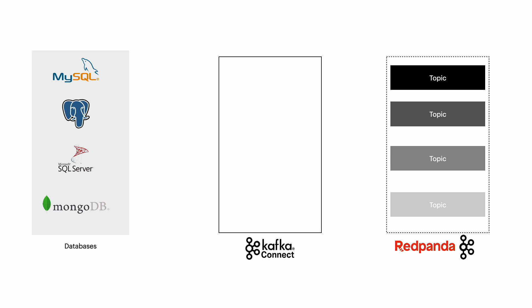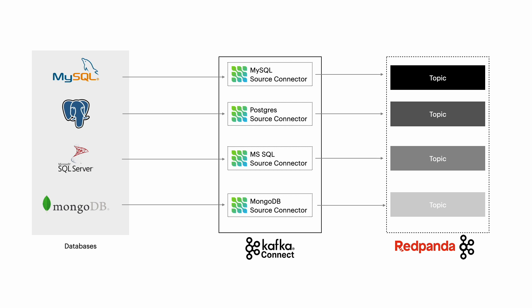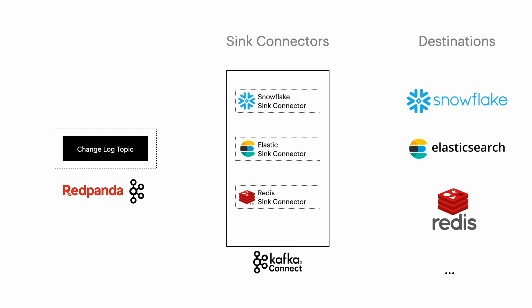When it comes to transaction logs, different databases have different implementations. For example, in MySQL it's called the binary log or binlog. In Postgres, it's called the WAL or write-ahead log. And in MongoDB, it's called the oplog or operations log. For each database type, Debezium implements a Kafka Connect source connector. These connectors connect to the database, capture the change events, and stream them into Kafka topics. That allows sink connectors to sync them into different destinations — for example, a new record added to the database can be propagated to different data stores simultaneously, such as updating a data warehouse, a search index, and a cache.